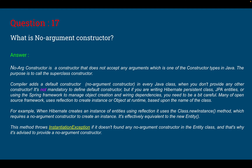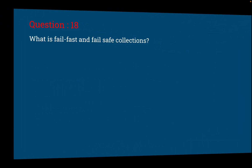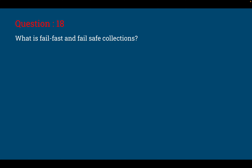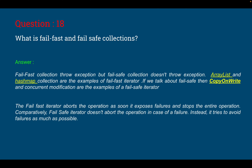Question number 18: what is a fail-fast and fail-safe collection? Fail-fast collections throw an exception, while fail-safe collections do not. ArrayList and HashMap are examples of fail-fast iterators. CopyOnWrite and ConcurrentModification are examples of fail-safe iterators. The fail-fast iterator aborts the operation as soon as it detects a failure and stops the entire operation. In contrast, the fail-safe iterator does not abort on failure — instead it tries to avoid the failure as much as possible.